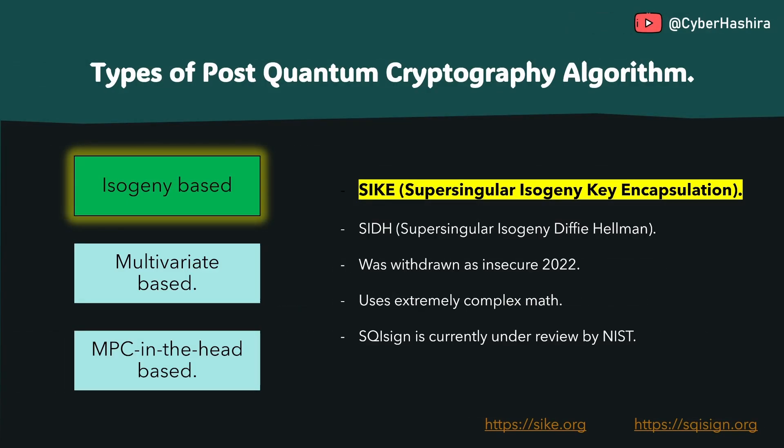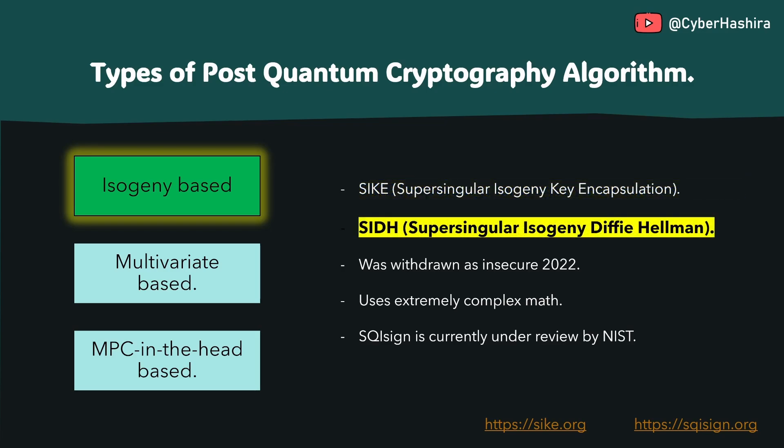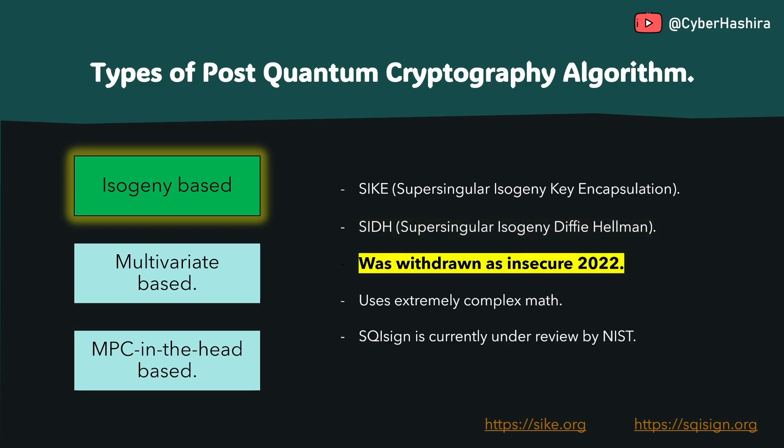Starting with isogeny-based cryptography: Super-Singular Isogeny Key Encapsulation, or SIKE, is an example of an isogeny-based algorithm developed for key encapsulation. Super-Singular Isogeny Diffie-Hellman is another isogeny-based algorithm developed for use in a key agreement protocol. Both of these algorithms were withdrawn after security vulnerabilities were discovered, rendering them insecure and disqualifying them from further consideration.